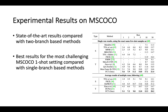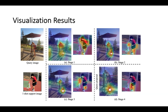We show the visualization of the cross-attention masks across the four cross-transformer stages. In the earlier stages, the attention mask spreads out over regions with similar color and texture, aligning the low-level feature space of the two branches. In the later stages, the attention mask focuses on semantic-related local regions, aligning the high-level feature space.